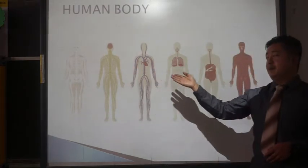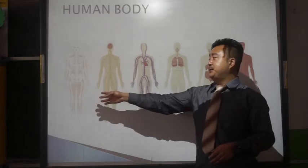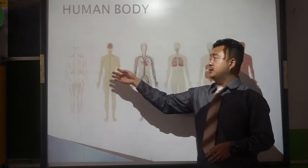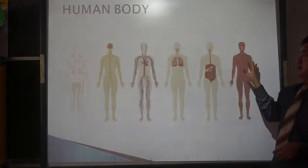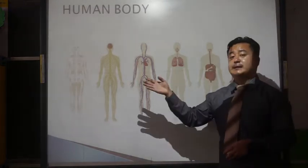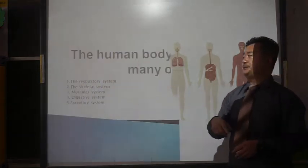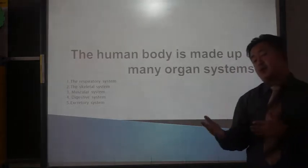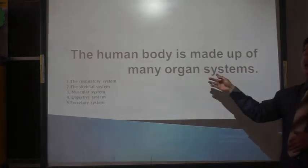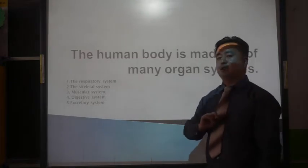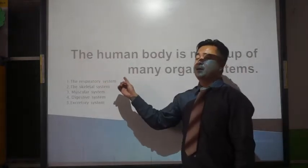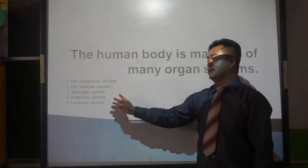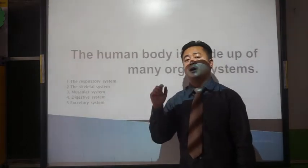You can see different pictures here — the skeletal system, nerves, internal organs, and the muscular system. As you all know, the human body is made of many organs, both internal and external, along with many organ systems: the respiratory system, skeletal system, muscular system, digestive system, and excretory system. These are the five systems of the human body.